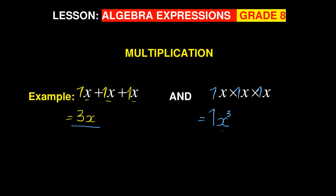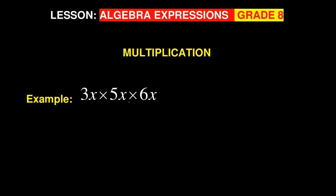Always remember these differences: when you are multiplying similar things, that count becomes a power. When you are adding similar things, that count becomes the coefficient — the number before the variable x.